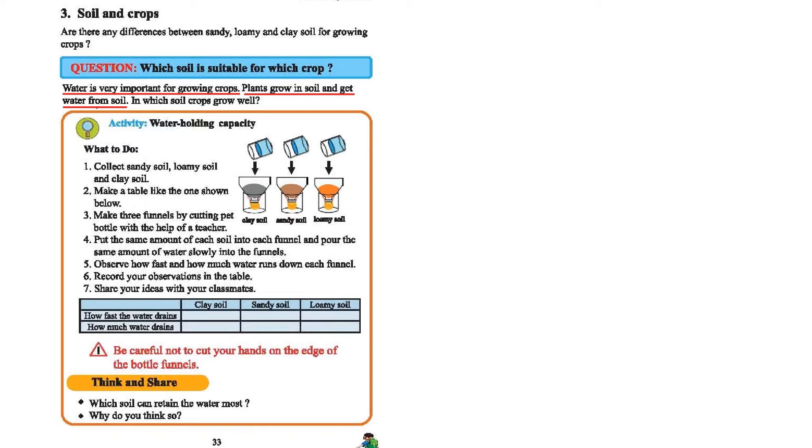Water is important for growing crops. Plants grow in soil and get water from the soil. In which soil do crops grow well? Before learning about that, we need to do an activity which is about water holding capacity. To do this activity we need to collect sandy soil, loamy soil, and clay soil.